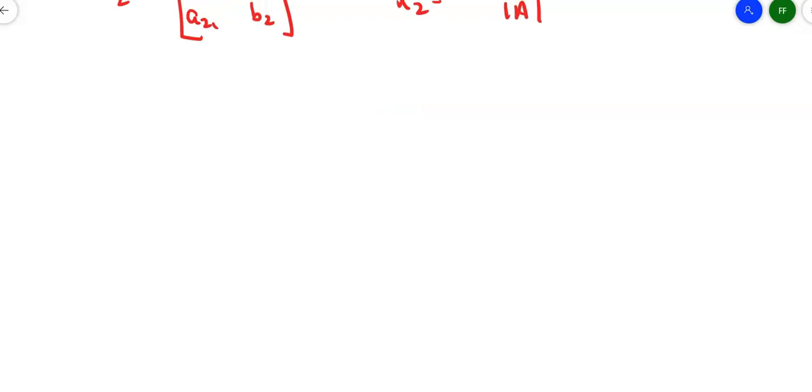So let's take a look at a 2 by 2 example. Suppose I've got x sub 1 minus 3x sub 2 is equal to 2, and 2x sub 1 plus x sub 2 is equal to 1.